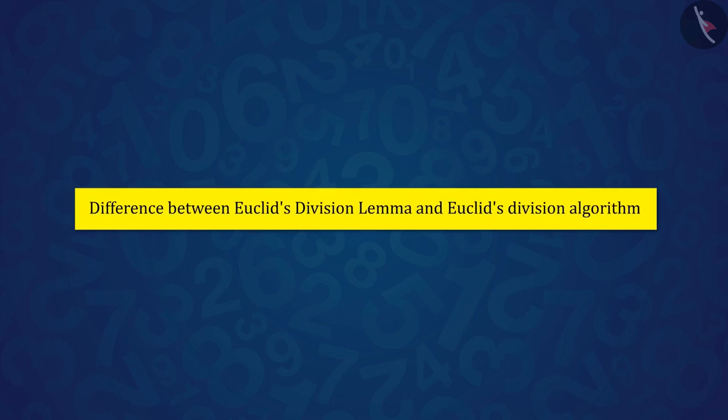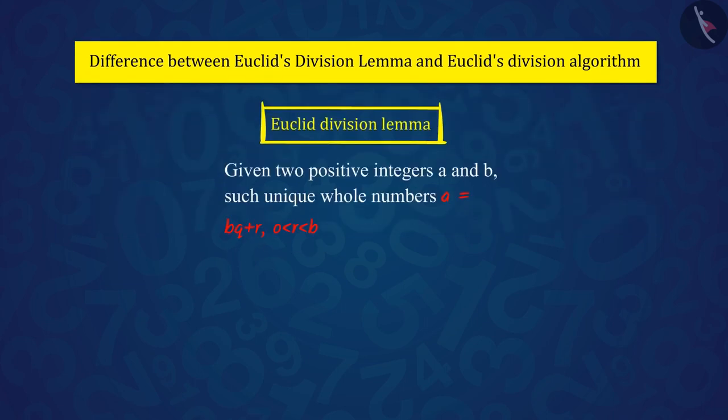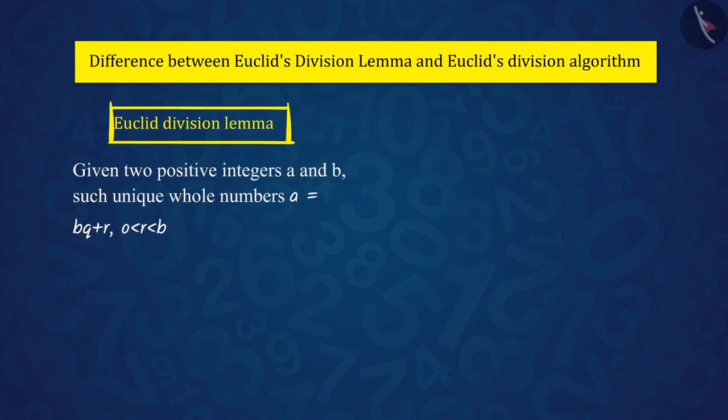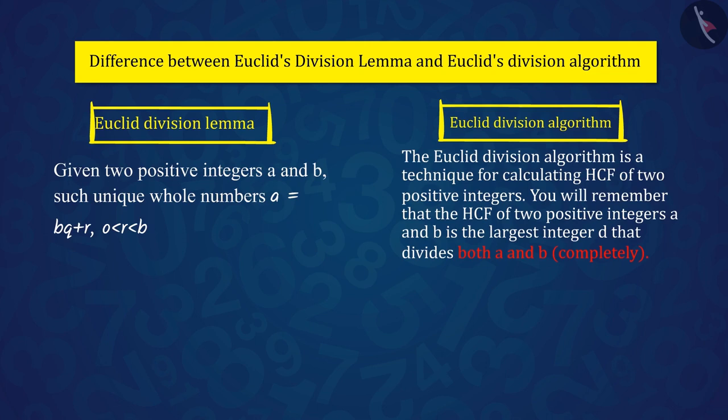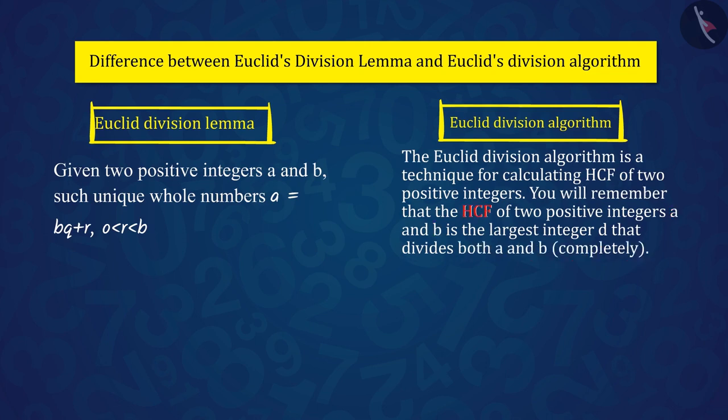Now let's understand the difference between Euclid's division lemma and Euclid's division algorithm. Euclid's division lemma is a proven statement which is used to prove another statement. While algorithm is a series of well-defined steps which is used to find the HCF of two positive integers a and b, where we can use the statement a = b × q + r of Euclid's division lemma.